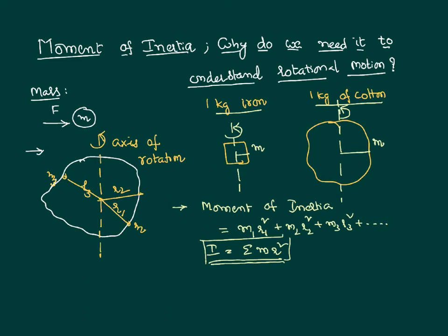Just as more mass requires more force for translatory motion, more moment of inertia requires more torque for rotational motion. The SI unit of moment of inertia is kilogram·meter² (kg·m²). The dimensional formula is M·L², since m is represented by M, r is a length so r² gives L², and there is no time component, so T⁰. Moment of inertia is therefore the physical quantity based on which we can decide whether it is easy or difficult to rotate a body.